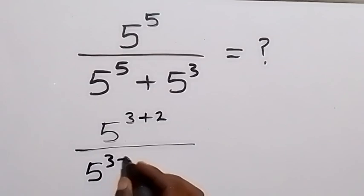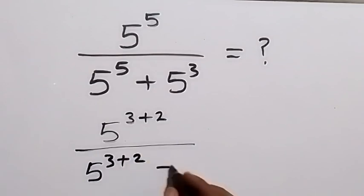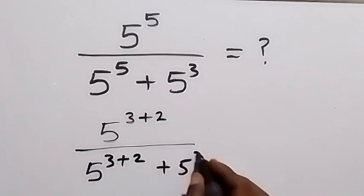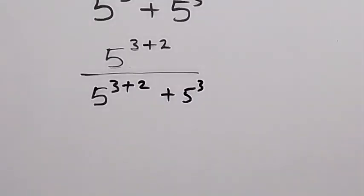5 raised to power 3 plus 2, then we have plus 5 raised to power 3. From here, in the next step from the law of indices, we can rewrite this.